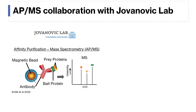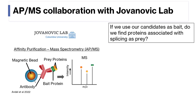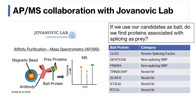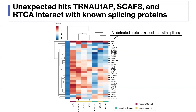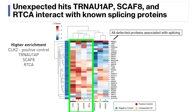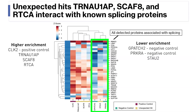This project also gave us the exciting possibility to collaborate with Marko Jovanovic and Lena Street at Columbia University to perform affinity purification mass spectrometry. In these experiments, we pulled down our unexpected hits as bait proteins, expecting to pull down proteins from the cell in close proximity as prey proteins, which we then identified with mass spec. Since splicing regulation occurs through a macromolecular collaboration of many splicing-associated proteins, we'd expect to see splicing-associated proteins enriched in our prey. We performed AP mass spec with four of our unexpected hits, a positive control, and two negative controls. Looking at splicing-associated proteins detected in the overall dataset, we see two clusters — one with higher enrichment of splicing-associated prey, and one with lower enrichment — providing positive evidence for tRNA1AP, SCAP-8, and RTCA playing roles in splicing regulation.